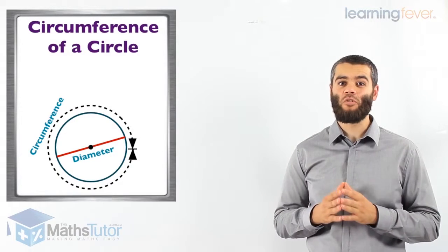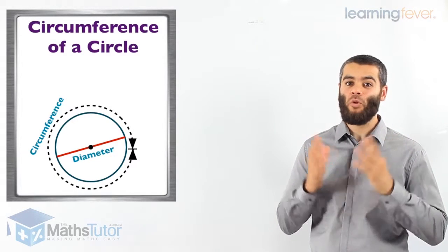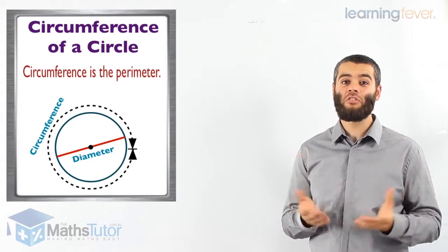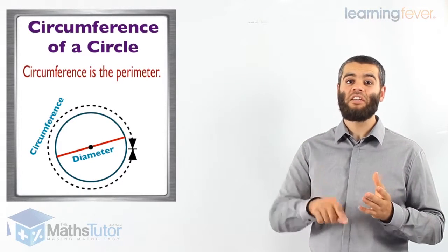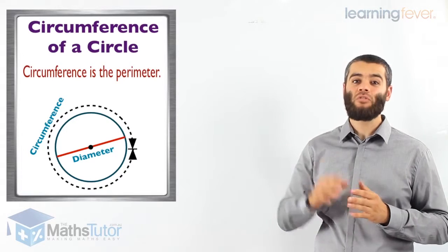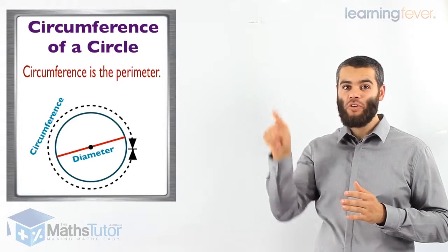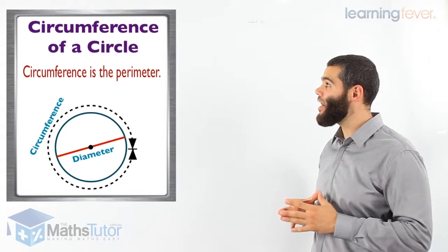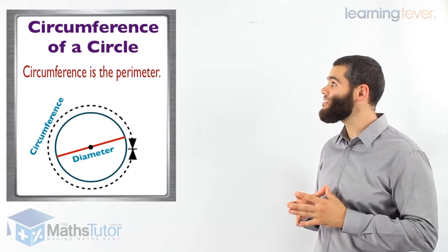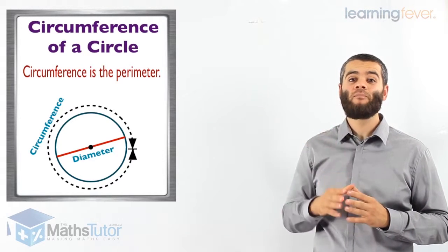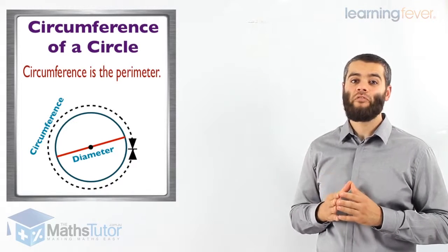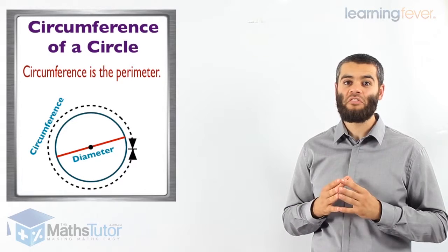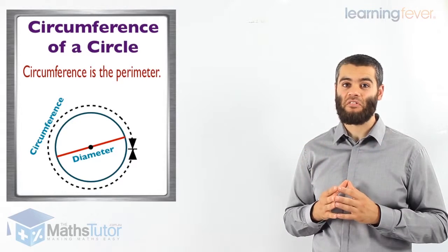The circumference of a circle — what is the circumference? Basically, the circumference is the perimeter of the circle. It's the outside, the actual boundary of the circle. As you can see here, we have the diagram. The circumference is basically the surrounding, the boundary of the circle. It is the perimeter of the circle. When we're dealing with circles, we call it the circumference.